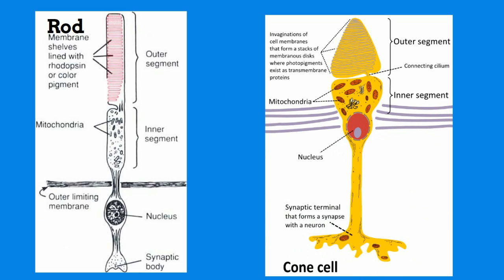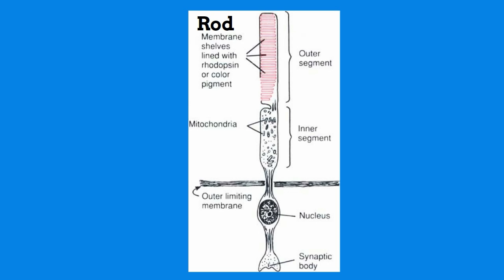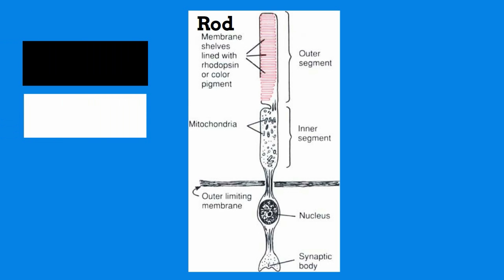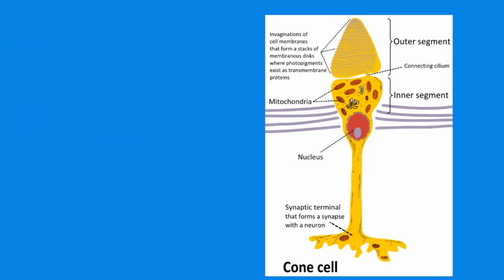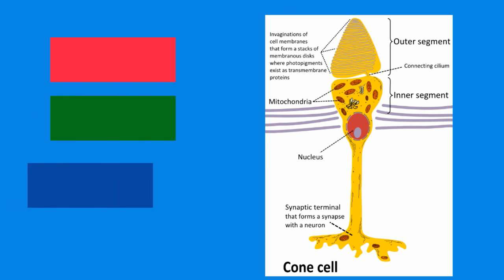There are two types of receptors: rods and cones. Rods work best in dim light and enable you to see black and white. Cones, on the other hand, work better in bright light and enable you to see colors. There are three types of cones — red, green, and blue — and they allow you to see the colors around you.